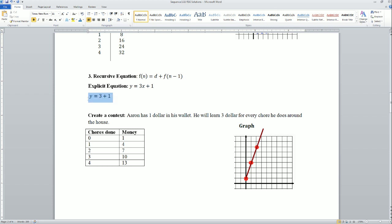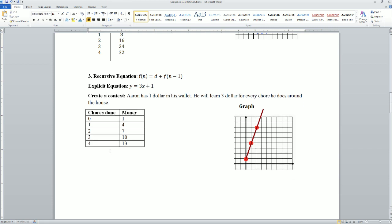Do you see that? I filled in that chart, and then I graphed it. I would say here: Aaron has one dollar in his wallet. He earns three dollars for every single chore he does around the house. So zero chores, he has one dollar; one chore, he has four; two chores, he has seven, and so on.